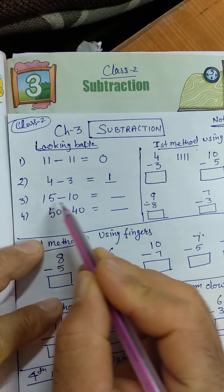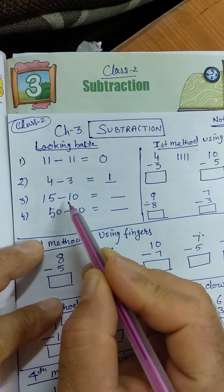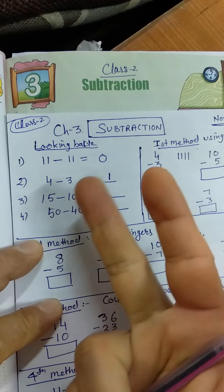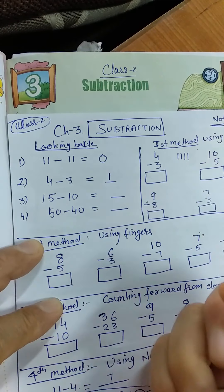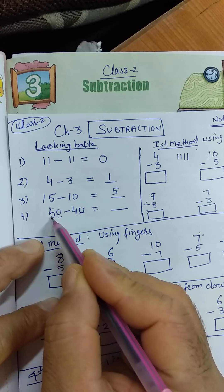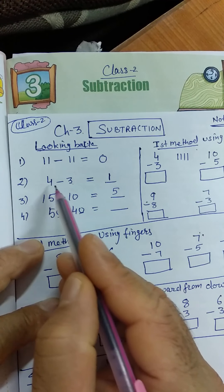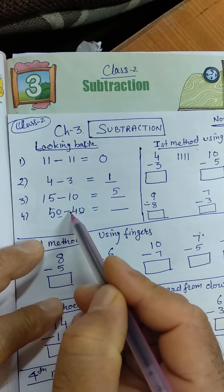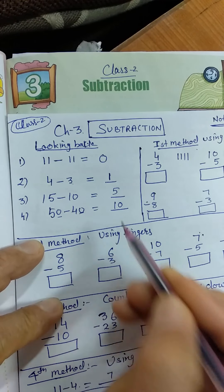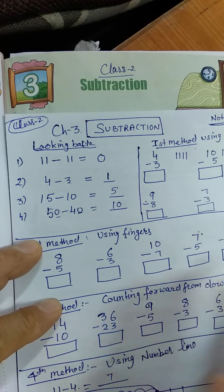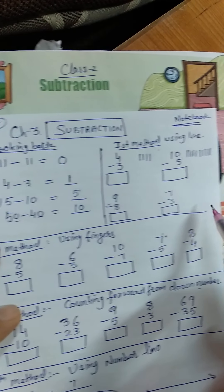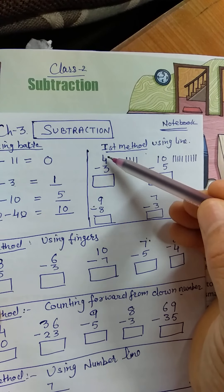Now if we see 15 minus 10: after 10 you count up to 15 — 11, 12, 13, 14, 15 — so the answer is 5. And if there is a 0 at the end, you can subtract the non-zero digits: 5 minus 4 is 1, so 50 minus 40 is 10. This is subtraction in a line, or horizontal subtraction. You can also write it in a column, which is called vertical subtraction.